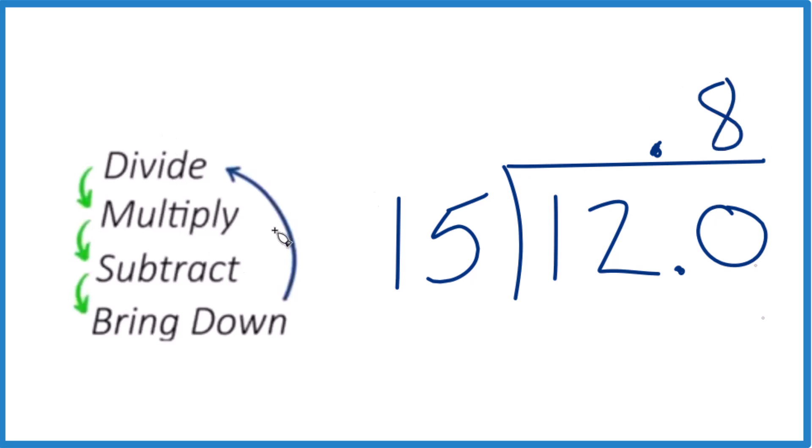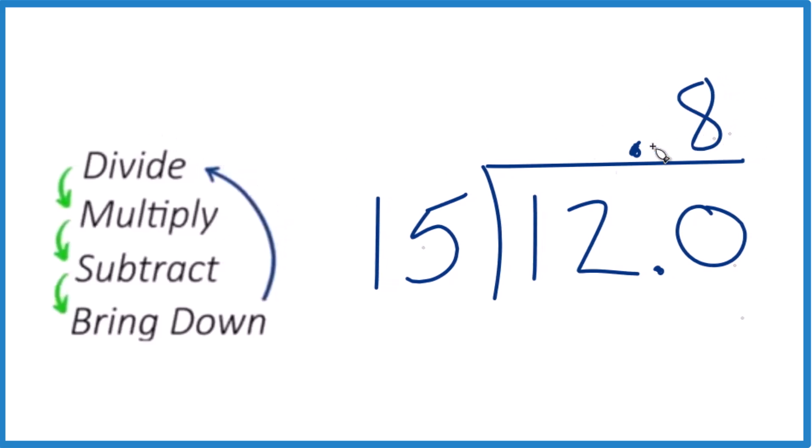So we've divided, now we multiply. So eight times 10 is 80. Eight times five is 40. 80 plus 40 is 120.